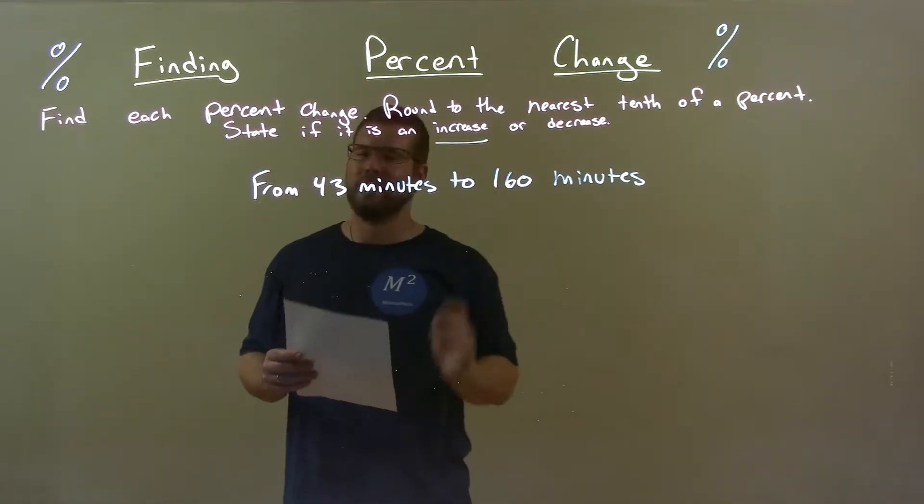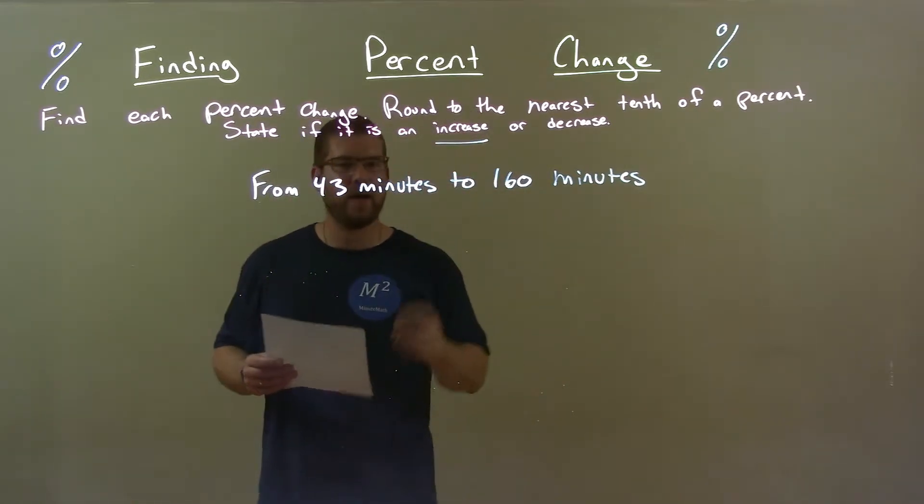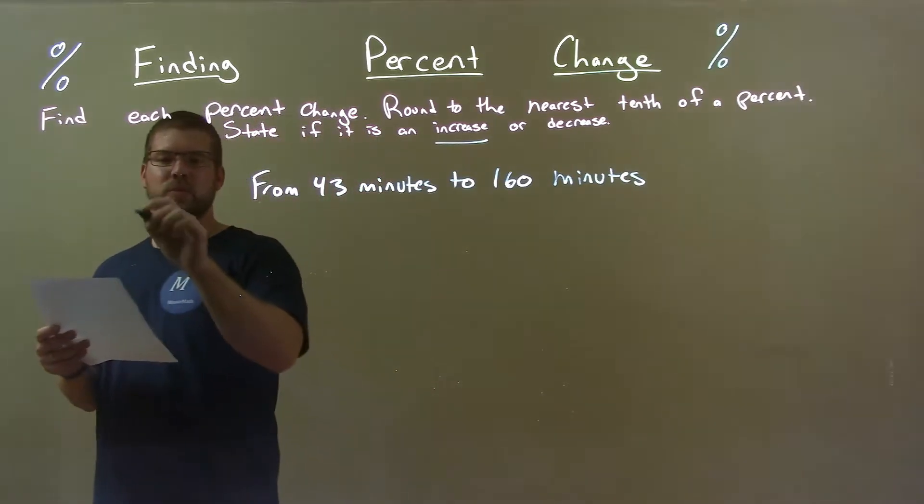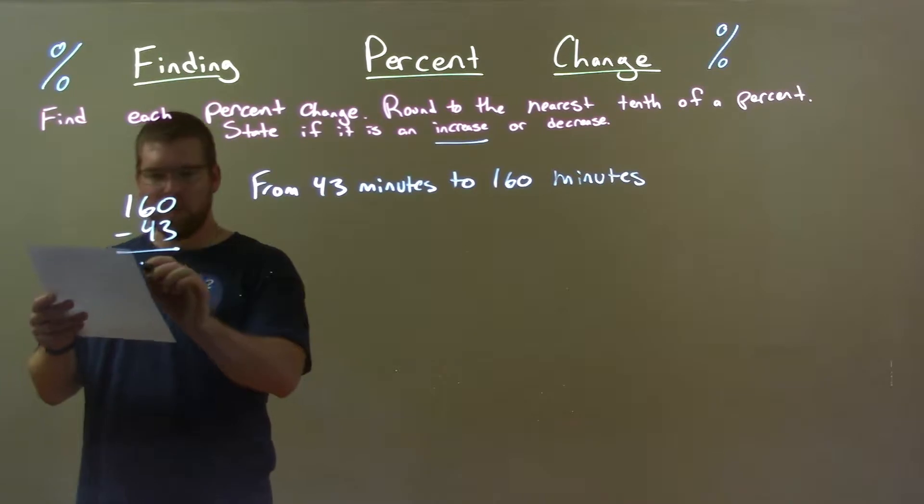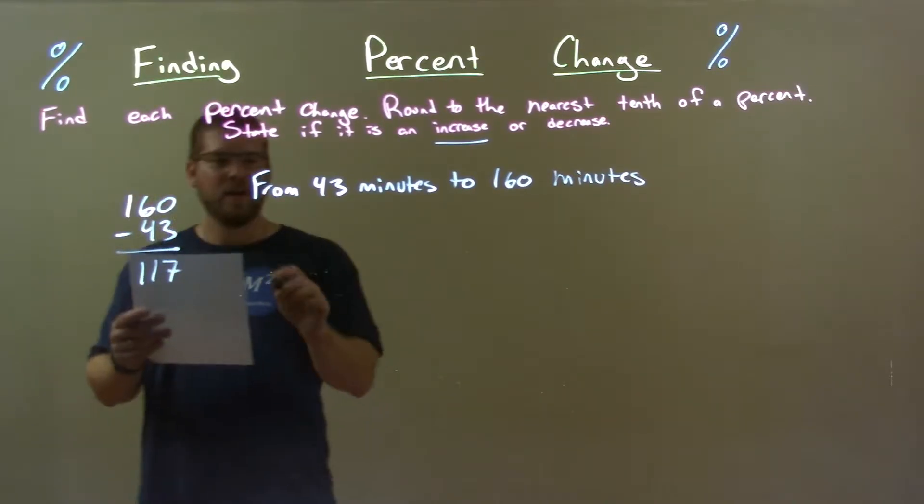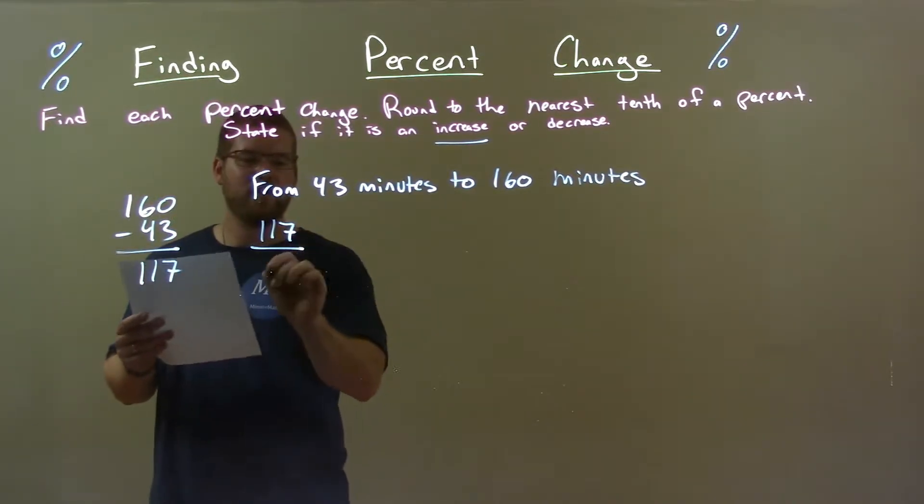This is clearly a classic case of an increase. We're going up. The difference between the two: 160 minus 43 gives me 117. Take that 117, divide it by the first number, which is 43.